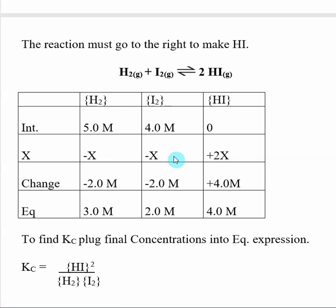Now I need to find the actual value for X, and I get this by looking at the equilibrium concentration given in the problem. I was told that at equilibrium, the concentration of I2 was 2.0 molar. That means the change from initial to equilibrium was negative 2.0 molar for I2, so my X value is 2.0 molar. Now that I know X is 2.0 molar, I can say that I have lost 2.0 molar of H2, so my equilibrium concentration of H2 is 3.0 molar.